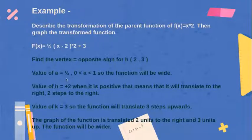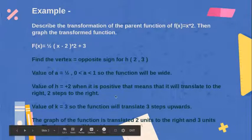Value of a equals ½. It is between 0 and 1, so the function will be wide. The value of h equals positive 2. When it is positive, that means it will translate to the right, 2 steps to the right.